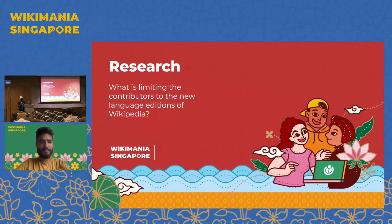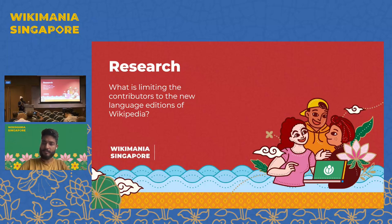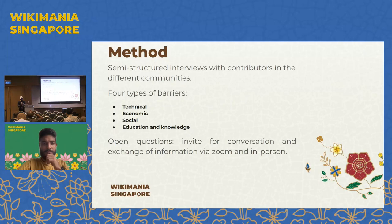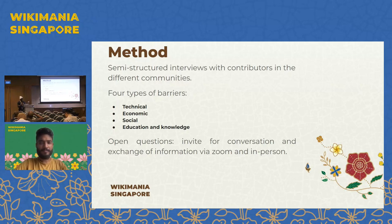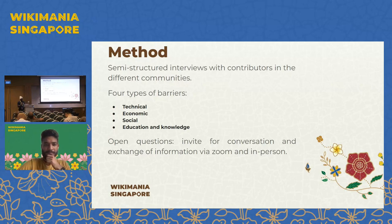What exactly were we trying to discover or investigate? The research was focused on understanding the limitations within the smaller language communities. We wanted to understand what is limiting the contributors of new language Wikipedia editions from the start in the incubator to when they are approved. The method we used was semi-structured interviews with contributors from different countries, identifying four types of barriers that these communities are facing. Prior to that, we conducted a survey within ourselves to see the topmost priorities for the research.